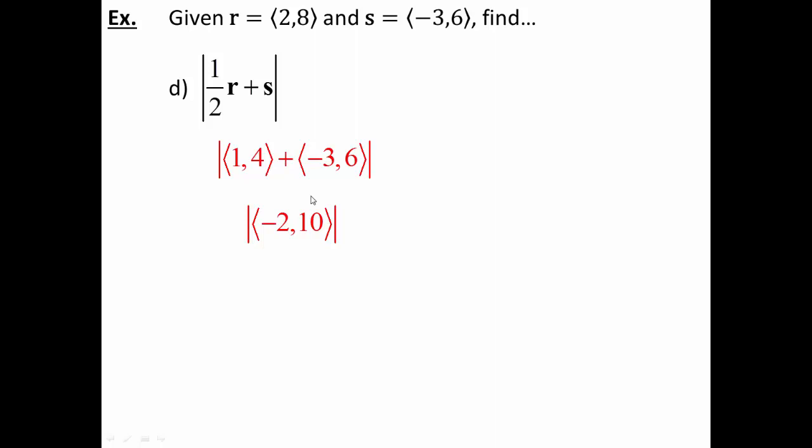And again, if you said the absolute value was (2, 10), you need to go back to the beginning of this lesson and start over because you have not been paying attention. Absolute value does not mean make things positive. Absolute value means how far is this coordinate, (-2, 10), from 0. In other words, what is the length of that vector? And we do that by using the Pythagorean theorem. So it's -2 squared plus 10 squared, which is 4 plus 100, which is 104. Square root of 104 or 10.198.